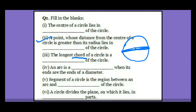So we have to write the third answer as diameter. The next fourth question is: an arc is a dash when its ends are the ends of the diameter. Then its name will be semicircle — it is dividing the circle into two equal halves. So the fourth answer is semicircle.